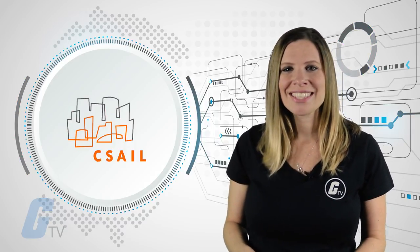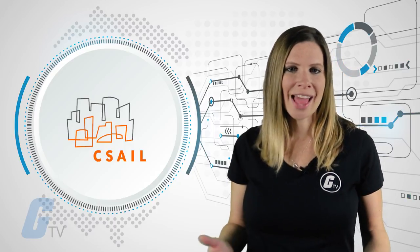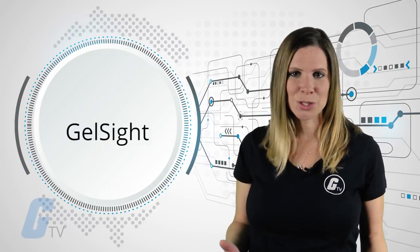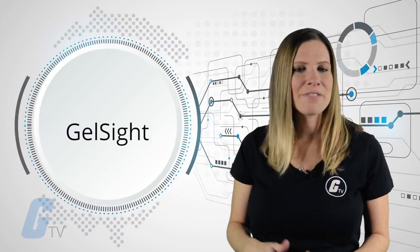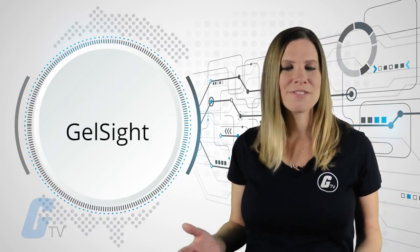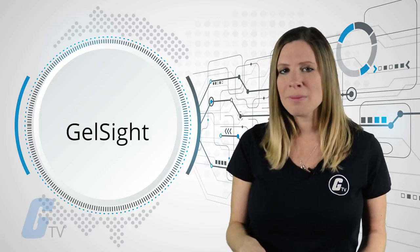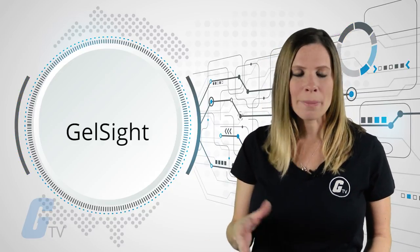Their Computer Science and Artificial Intelligence Laboratory's gel-site sensor is able to provide a detailed 3D map of an object's surface during physical contact when placed onto a robotic gripping arm.